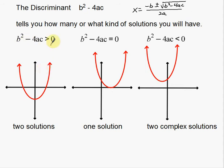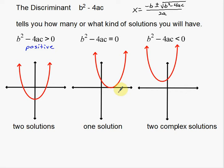If the discriminant is greater than zero — basically if it's positive — then you're going to have two solutions. Your parabola is going to cross the x-axis two different times. Those are your normal run-of-the-mill quadratic equation problems. On the other hand, if the discriminant is equal to zero, you only have one solution, meaning the vertex of your parabola is actually touching the x-axis.